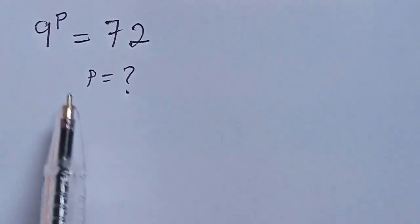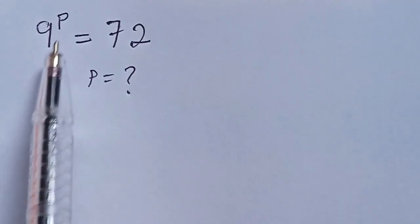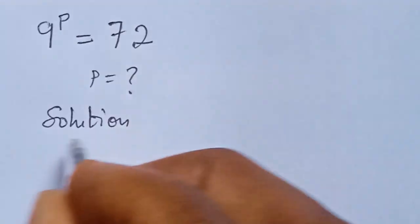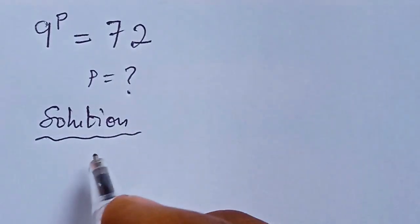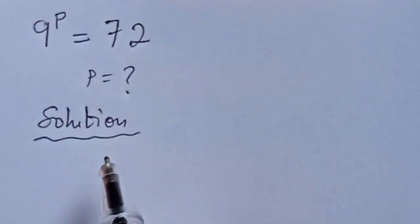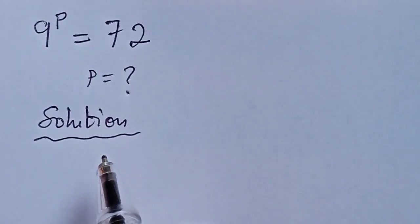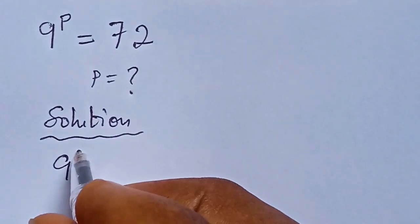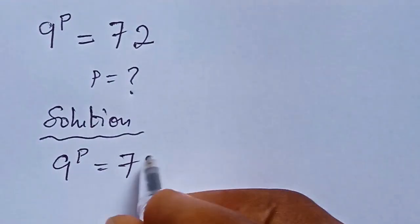Hi everyone, welcome to another interesting lesson. We want to solve this expression: 9 to the power of p equals 72. What is the value of p? We are going to approach this question with two interesting methods — one short method and one long method. Stay to the end of the video so you can learn the shortcut method. Let's begin: 9 to the power of p equals 72.